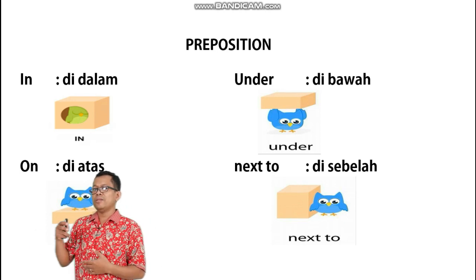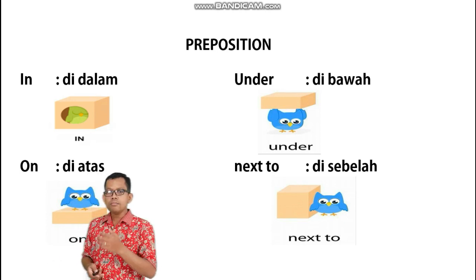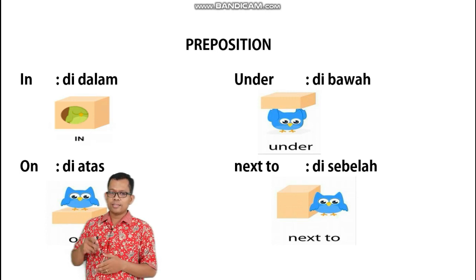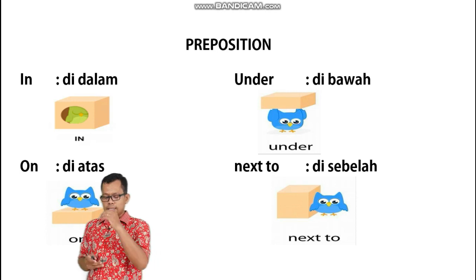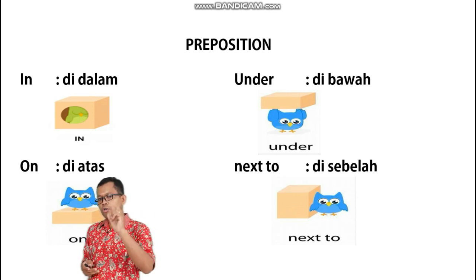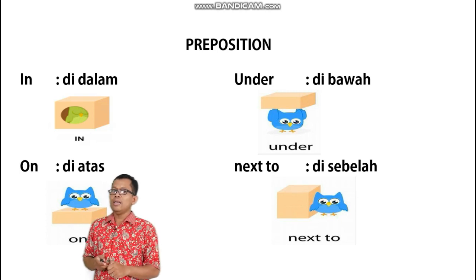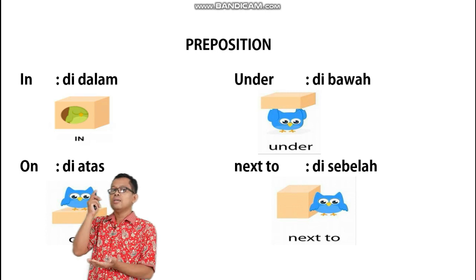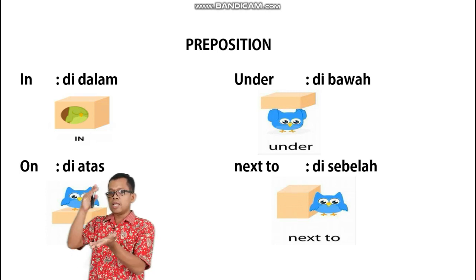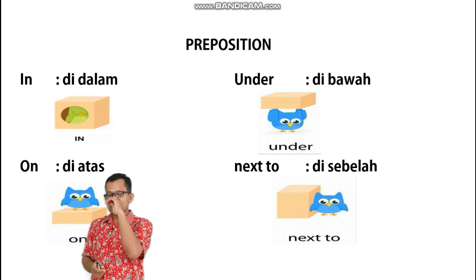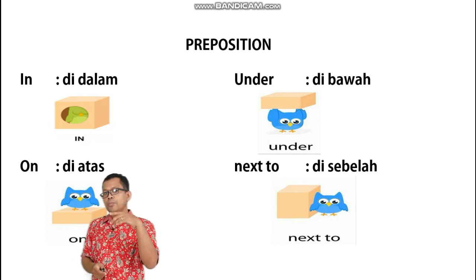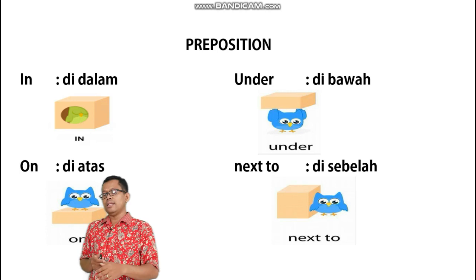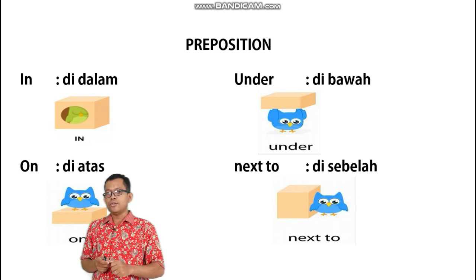There is a chicken in the box. Lalu yang kedua, 'on'. On itu artinya di atas. Ada banyak pengertian 'on' di atas — ada 'above' dan sebagainya. Tetapi 'on' khusus di sini adalah jikalau benda sebagai subjek itu tepat berada di atas benda lainnya sebagai objeknya, jadi saling bersentuhan. Dalam gambar itu, the blue bird is on the box — burung itu berada tepat di atas kardus.